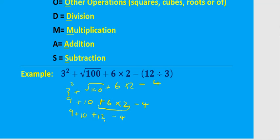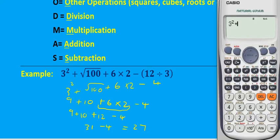19 plus 12 is 31, minus 4. And at the end we subtract, so 31 minus 4 gives us 27. The nice thing about Casio scientific calculators is that they use BODMAS.